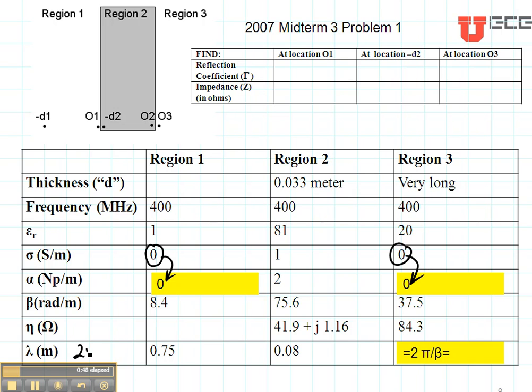The value of lambda is found using 2π divided by beta. Here are the values of beta, so here are the values of lambda given. The only one that we generally don't need is region number three.